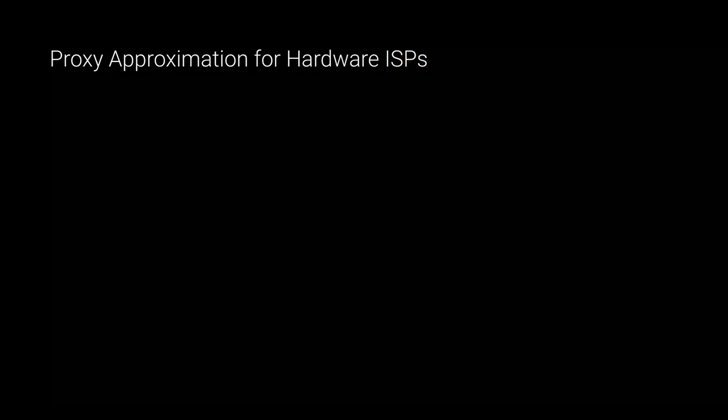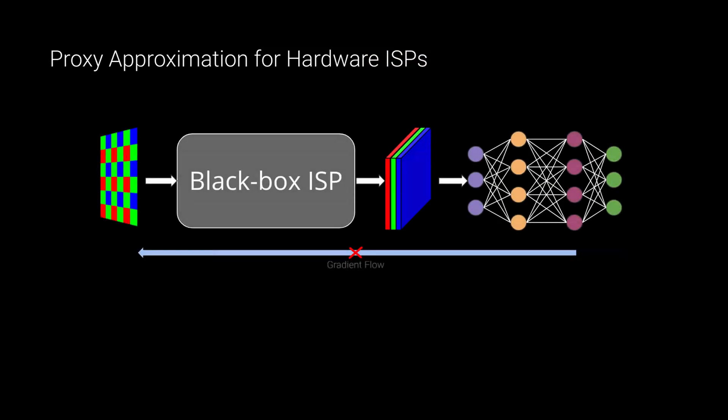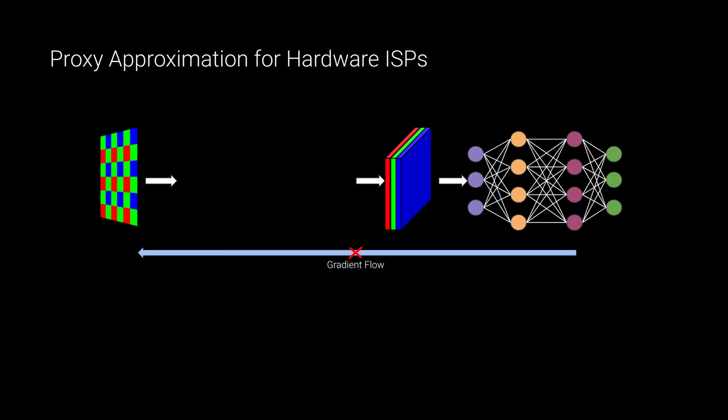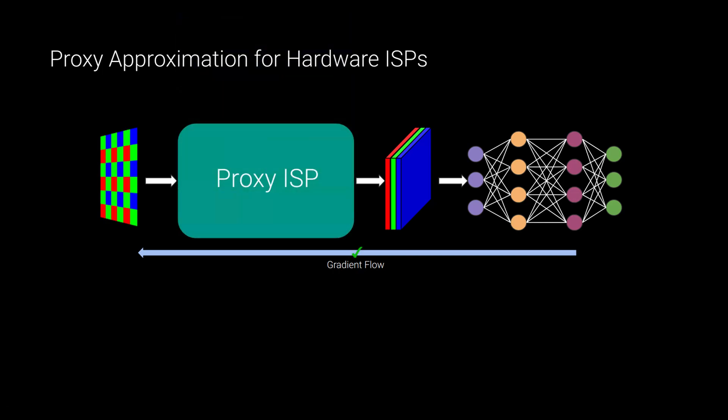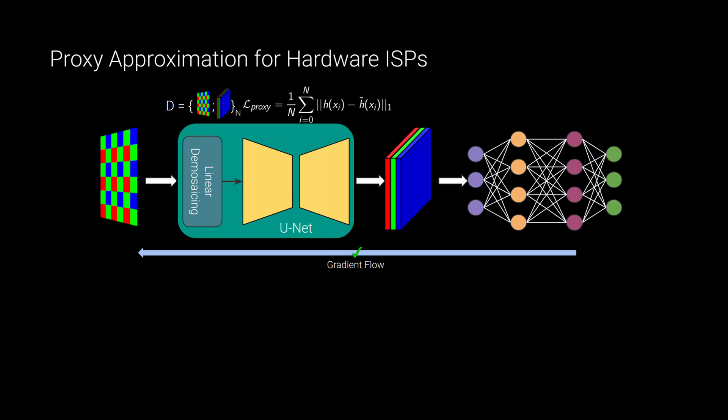To deal with the black box and non-differentiability nature of the hardware ISPs, we introduce proxy ISPs, which replace the original ISP with a differentiable approximation. This function consists of a linear demosaicking operation and a unit. We optimize the parameters of this function by collecting thousands of image pairs and train it with an L1 reconstruction loss.